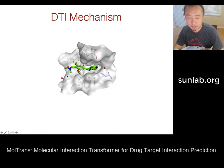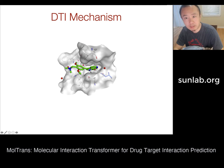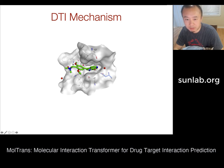Looking at binding from a real 3D structure perspective, the drug molecule is much smaller than the protein. It interacts at some particular position of the protein and binds there. This is an intrinsically local process, meaning you may not need to know everything — local structure is very important for both the protein and the molecule.